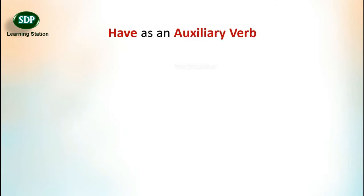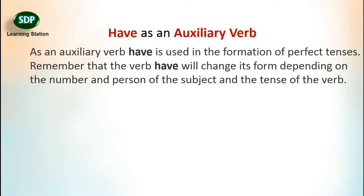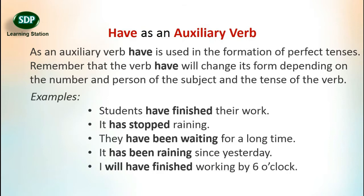As an auxiliary verb, 'have' is used in the formation of perfect tenses. Remember that the verb 'have' will change its form depending on the number and person of the subject and the tense of the verb. Examples: 'Students have finished their work.' 'It has stopped raining.' 'They have been waiting for a long time.' 'It has been raining since yesterday.' 'I will have finished working by 6 o'clock.'